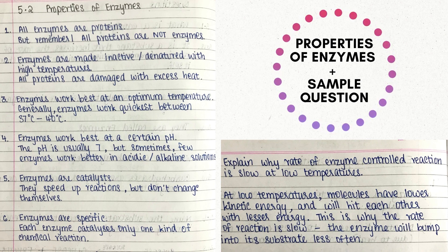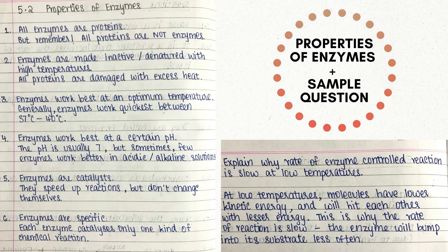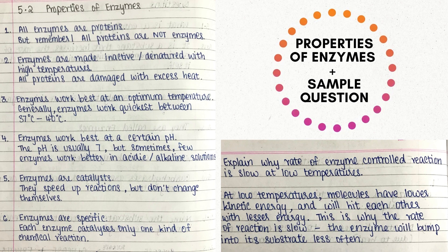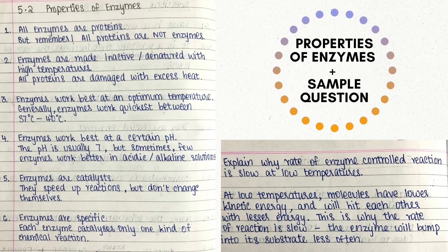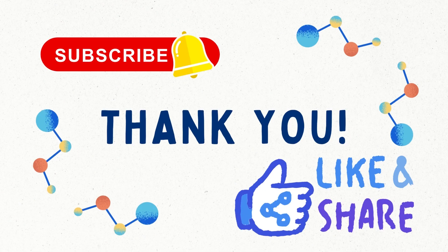A substrate is a molecule that is changed in a reaction. The part of the enzyme where the substrate binds is known as the active site, and the shape of the active site is complementary to the shape of the substrate, so that the substrate and the active site can bind. When the substrate molecule binds to the active site, it is changed to a product and then released. When the substrate binds to an enzyme, we call it an enzyme-substrate complex before it is converted into products.